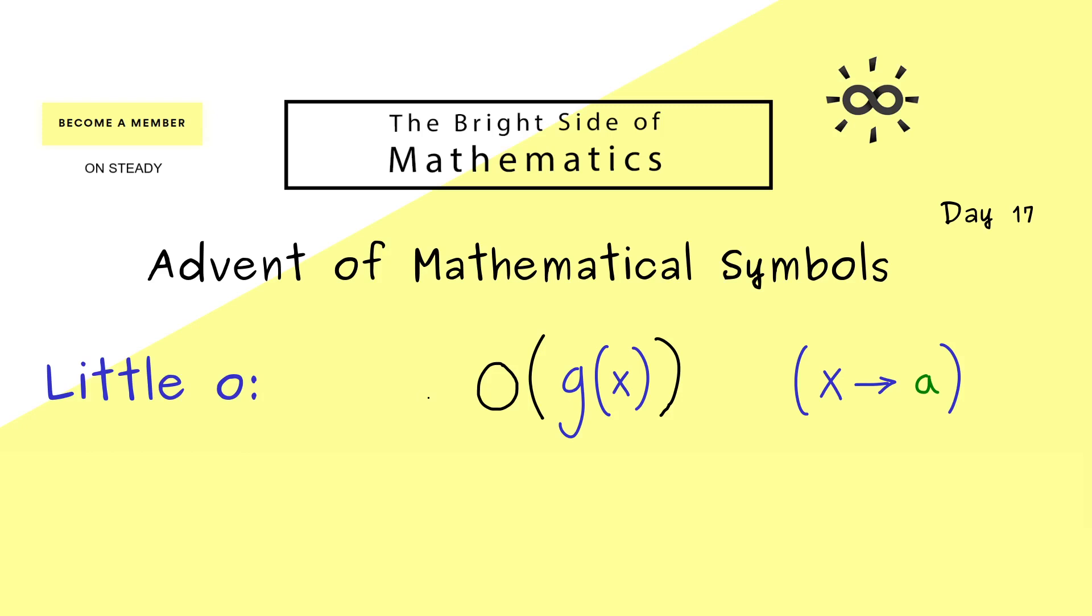Now in this little o notation we usually use an equality sign in a symbolic way. So we would say another function f of x is equal to little o of g of x. However as for the big o notation an element relation here would be the formal correct way. Nevertheless of course this is not so important.